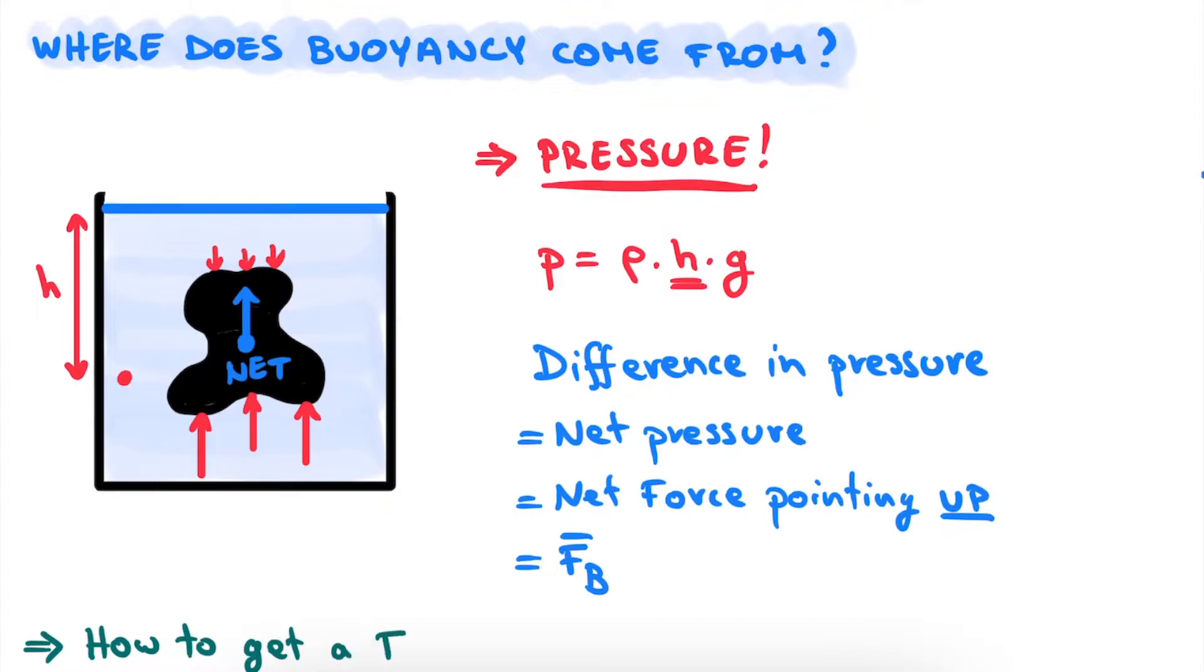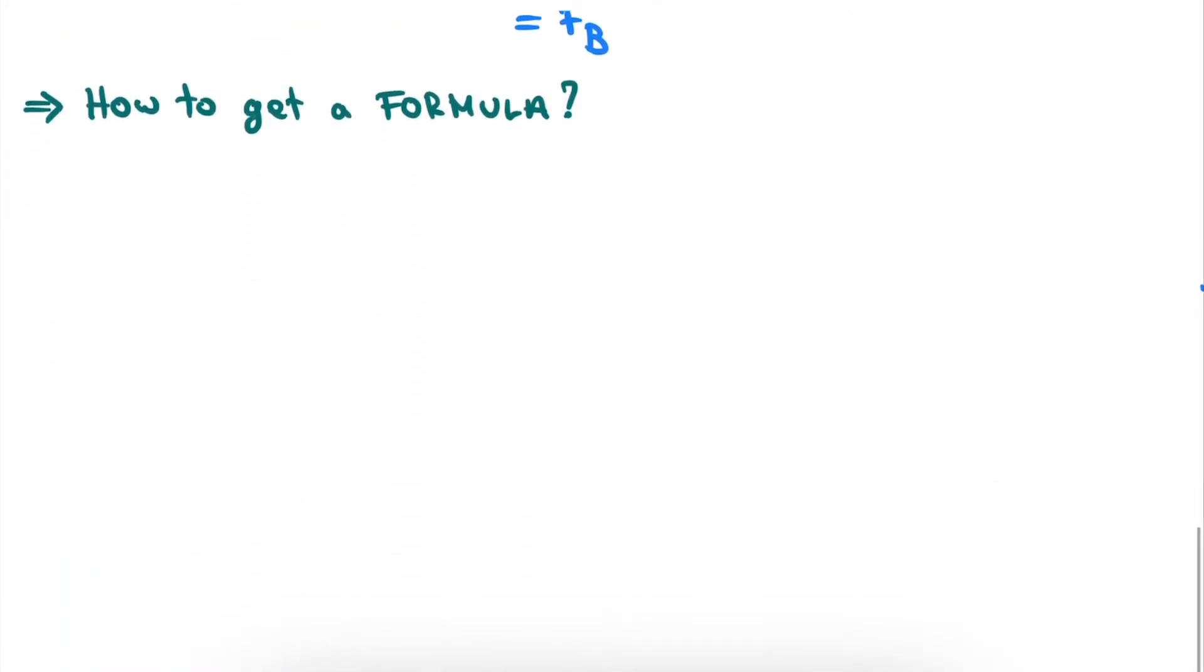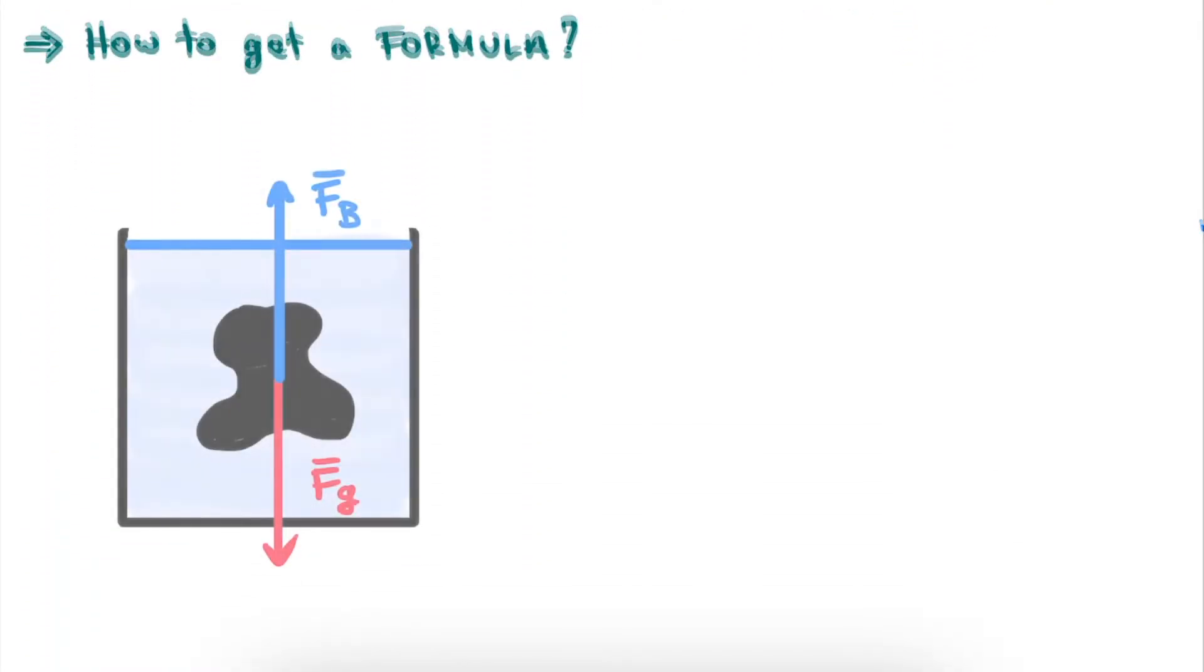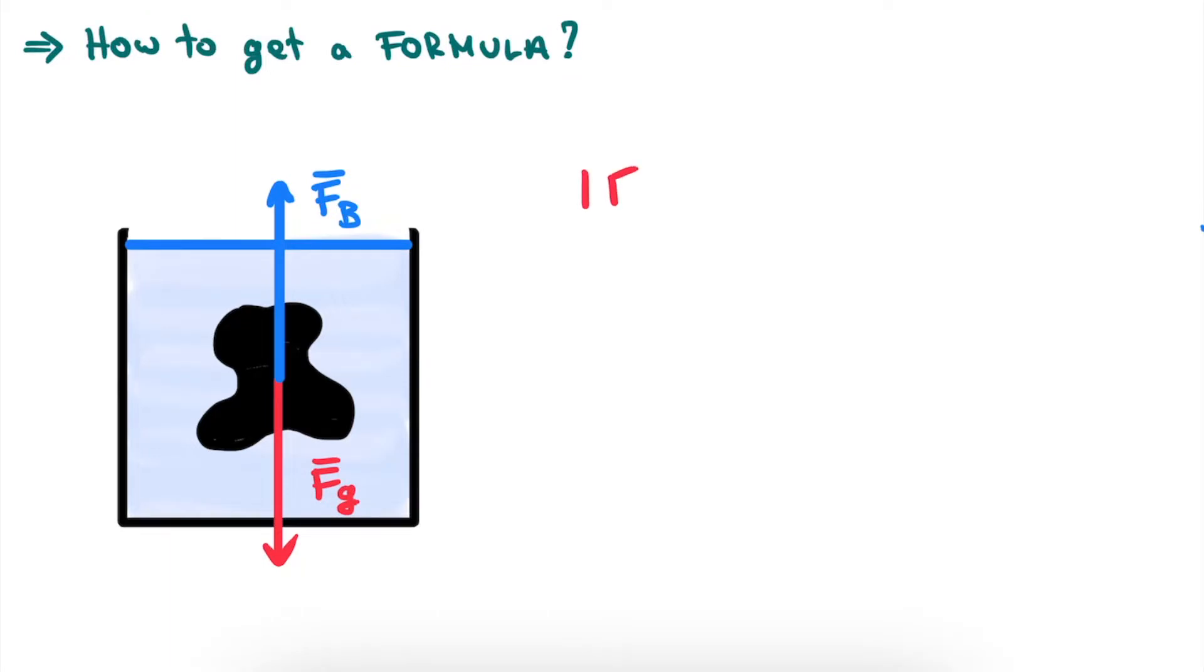How can we now get from this intuitive picture to a formula we can use to compare with the force of gravity? The key step here is to consider the question for which object do we know that both forces cancel each other out perfectly, meaning that the object neither floats nor sinks, but just remains stationary.